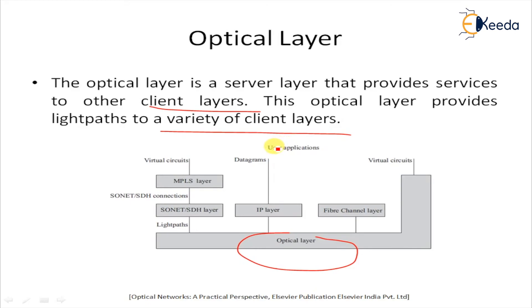Second generation optical networks may provide other services compared to light paths, such as packet switching, virtual circuits, and datagram services. These services may be directly interfaced with user applications.